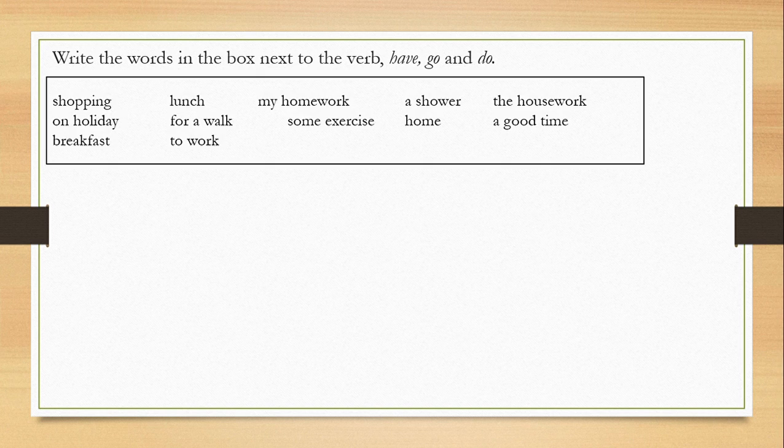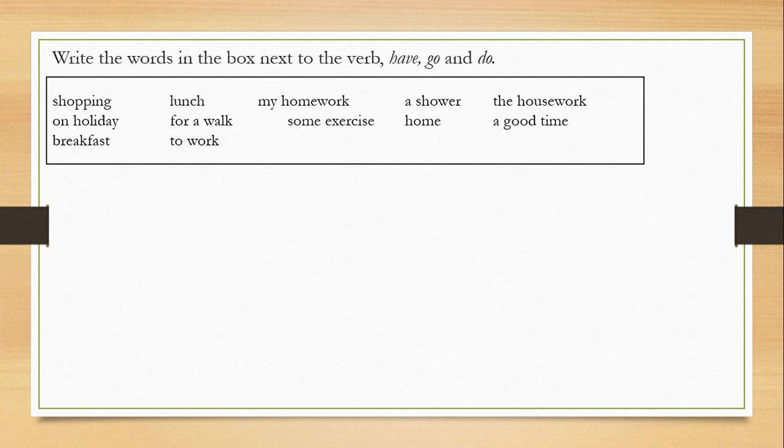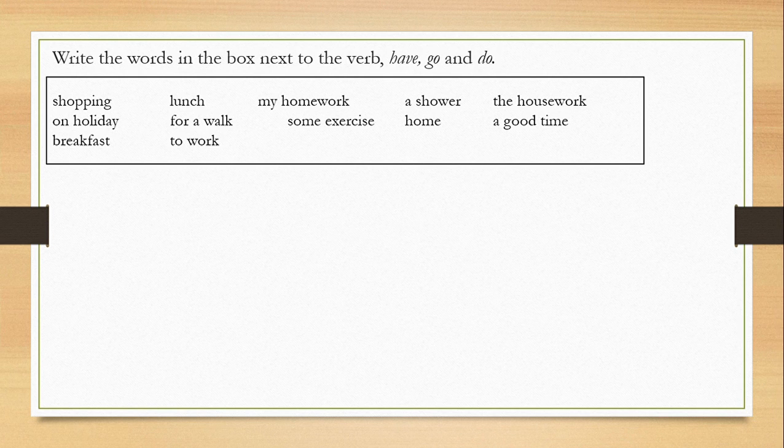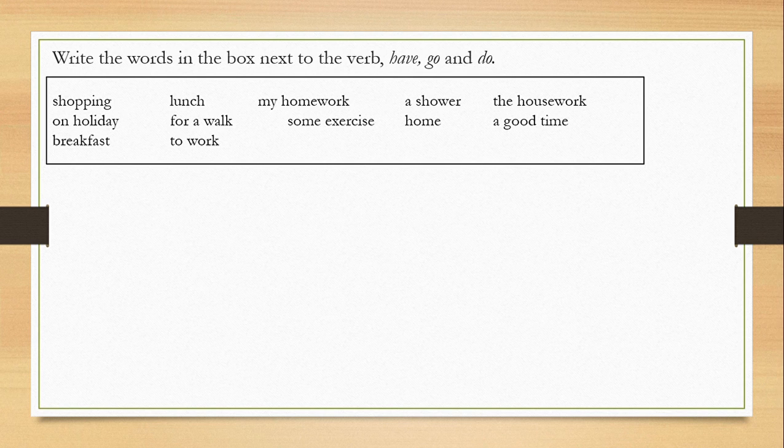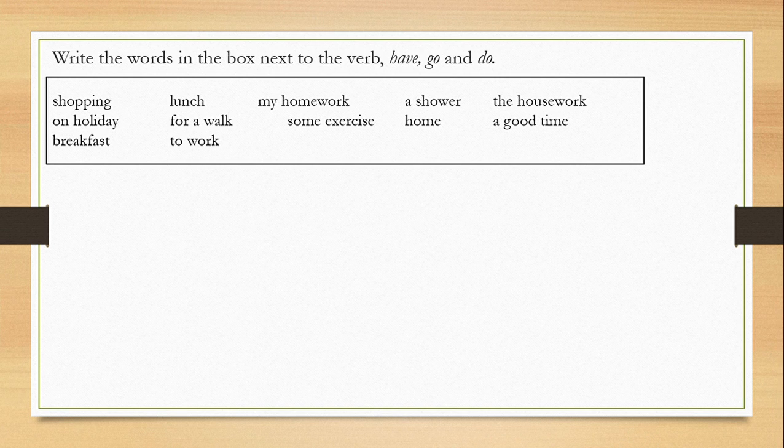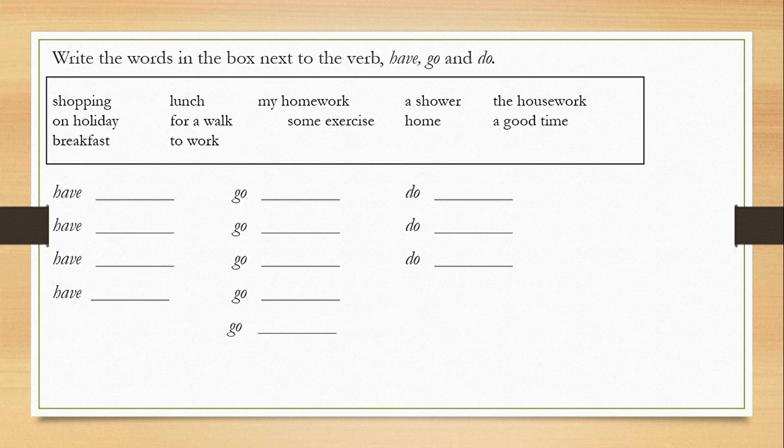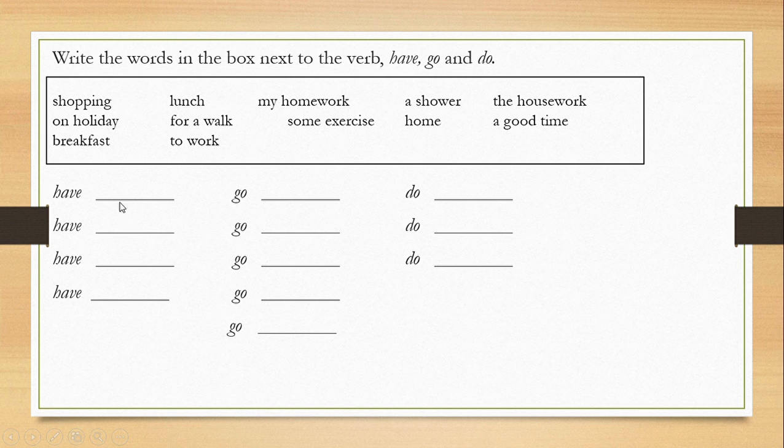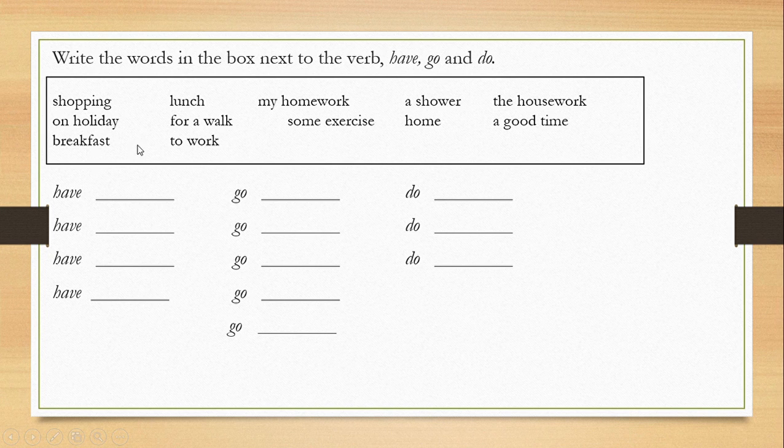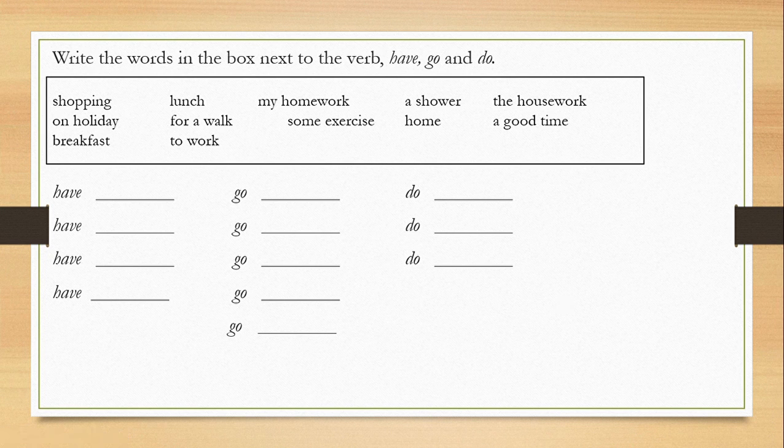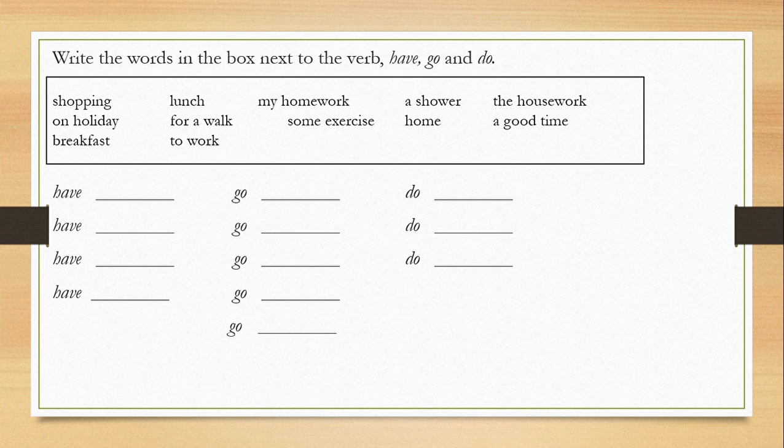So you will see the words here in the box which are shopping, lunch, my homework, a shower, the housework, on holiday, for a walk, some exercise, home, a good time, breakfast, to work. So what you have to do is to match the words in the box to complete in this blank space. For example, have breakfast. I can give you three minutes to complete this and then I will show you the answer.